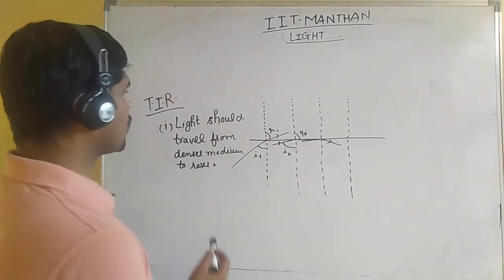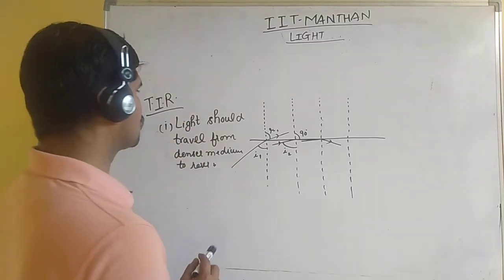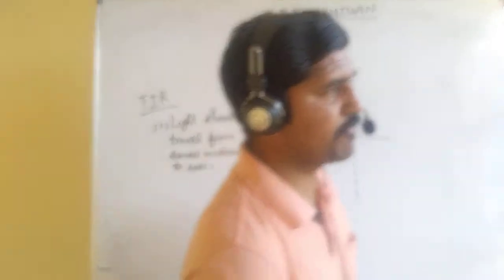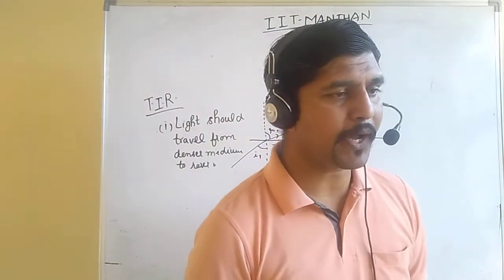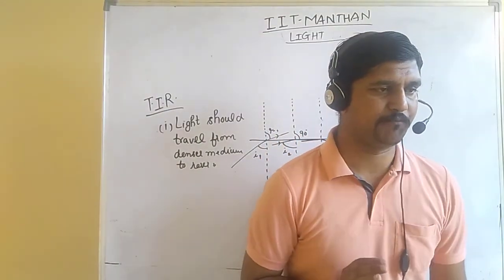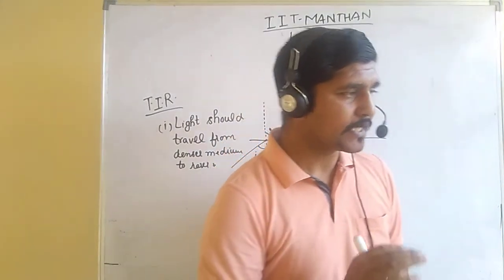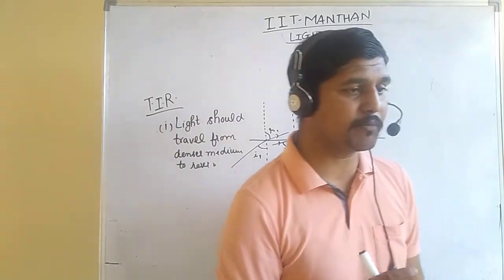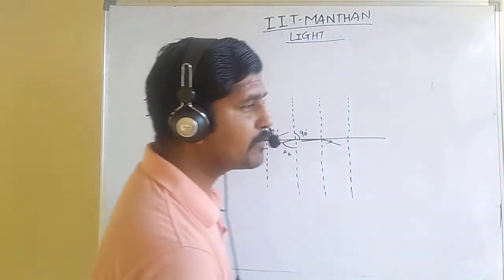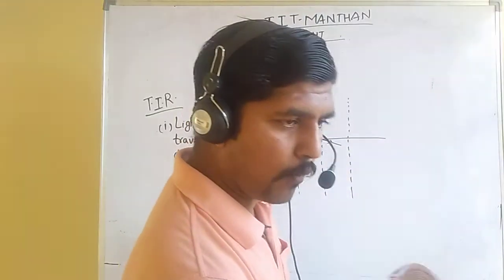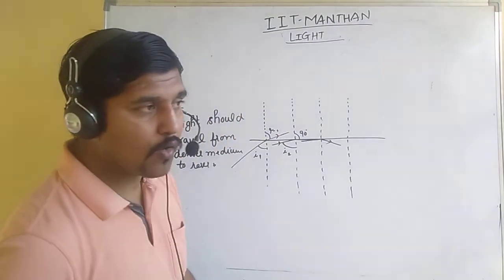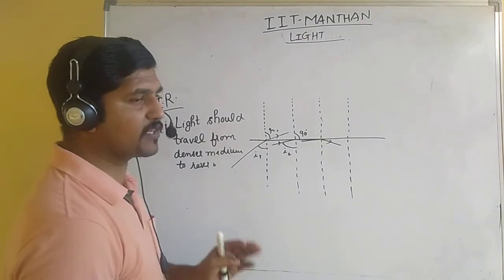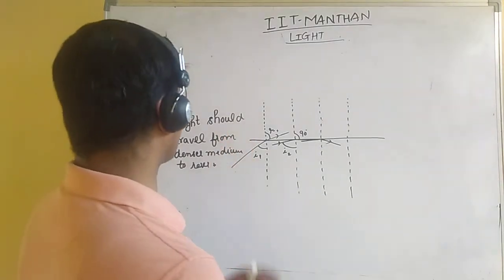Next is Total Internal Reflection — T for Total, I for Internal, R for Reflection. What do we mean by Total Internal Reflection? Let us try to understand TIR and what are the conditions to be considered for Total Internal Reflection.